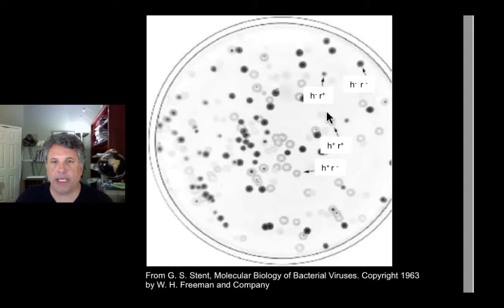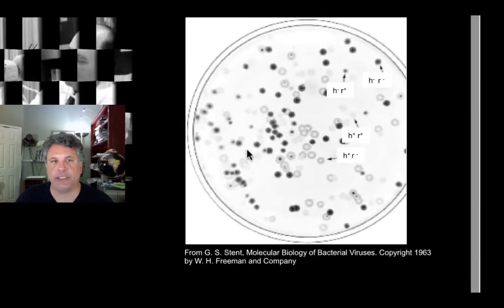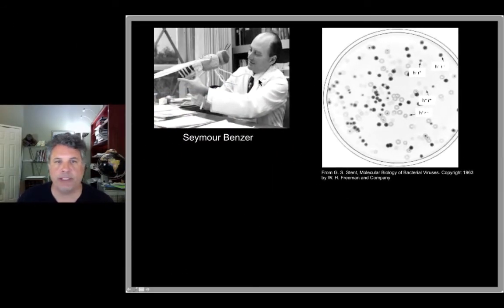R-minus mutations cause large plaques on certain bacteria and this ability to define plaque morphology was exploited by phage geneticist Seymour Benzer at the California Institute of Technology. After his phage work, later in life he moved on to studying fruit flies, my favorite organism, and did some very beautiful work on the neurobiology of fruit flies. But we're concerned with his early work on the nature of the gene studying bacteriophage.